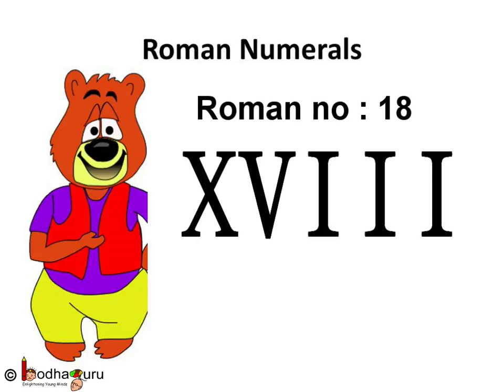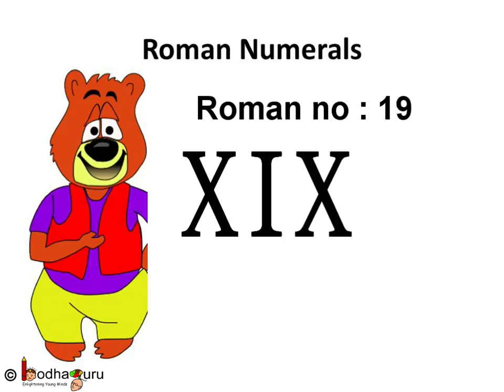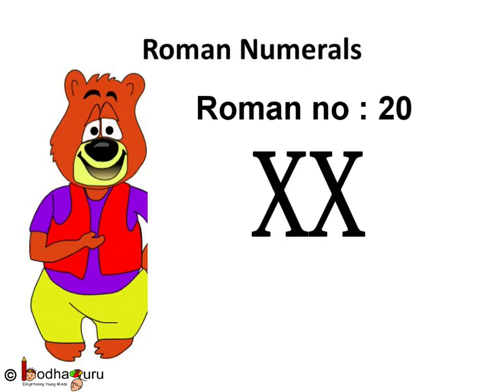18 is X followed by 3 I's. 19 is 10 plus 9. The symbol for 10 is X and the symbol for 9 is I followed by X. 20 is 2 tens, that is 10 plus 10, so the symbol for 20 is X followed by another X.